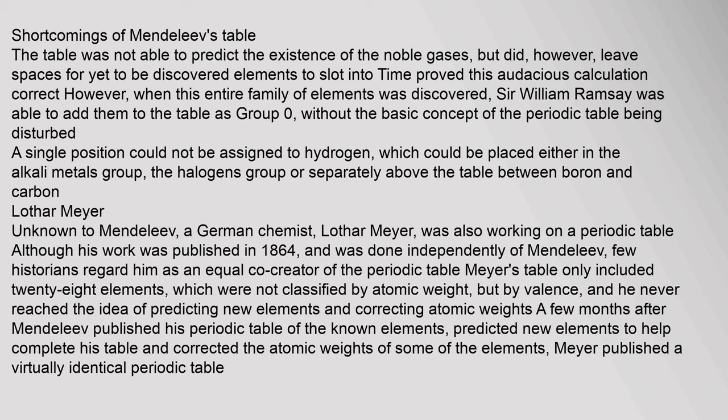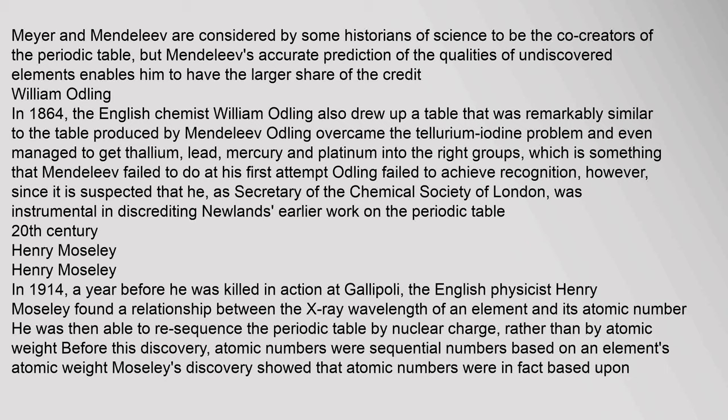Unknown to Mendeleev, a German chemist, Lothar Meyer, was also working on a periodic table. Although his work was published in 1864 and done independently of Mendeleev, few historians regard him as an equal co-creator of the periodic table. Meyer's table only included 28 elements, classified by valence rather than atomic weight, and he never reached the idea of predicting new elements or correcting atomic weights. Meyer and Mendeleev are considered by some historians of science to be co-creators, but Mendeleev's accurate prediction of the qualities of undiscovered elements gives him the larger share of the credit.